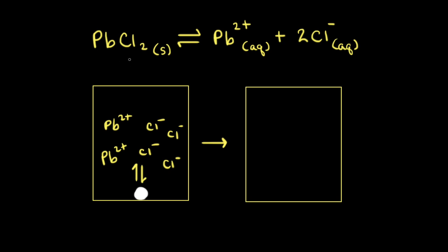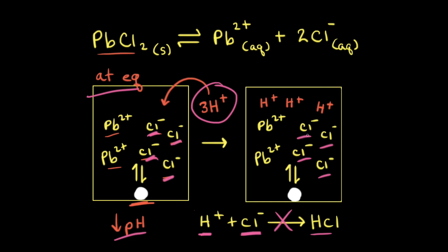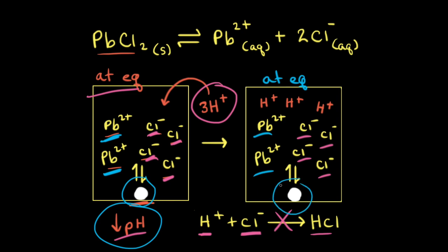Now, instead of lead(II) fluoride, let's look at lead(II) chloride. Lead(II) chloride is also a white solid, and if we dissolved some in solution, we would eventually reach an equilibrium between the solid and the ions in solution. This diagram shows a saturated solution of lead(II) chloride at equilibrium. When we decrease the pH by adding H⁺ ions, the chloride anions are not basic enough to react with the H⁺ ions. Therefore we do not form HCl, and the concentration of chloride anions remains the same, so the system stays at equilibrium and the pH change had no effect on the solubility of the solid.